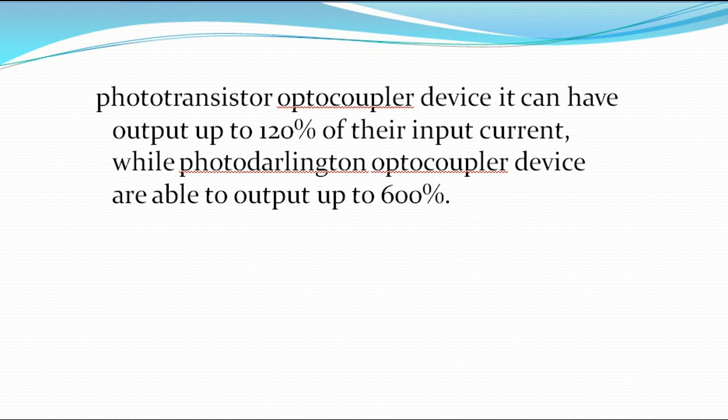Phototransistor optocoupler devices can have output up to 120% of their input current, while photodarlington optocoupler devices are able to output up to 600%. I will explain this percentage in a future video, as it is all about current transfer ratio.